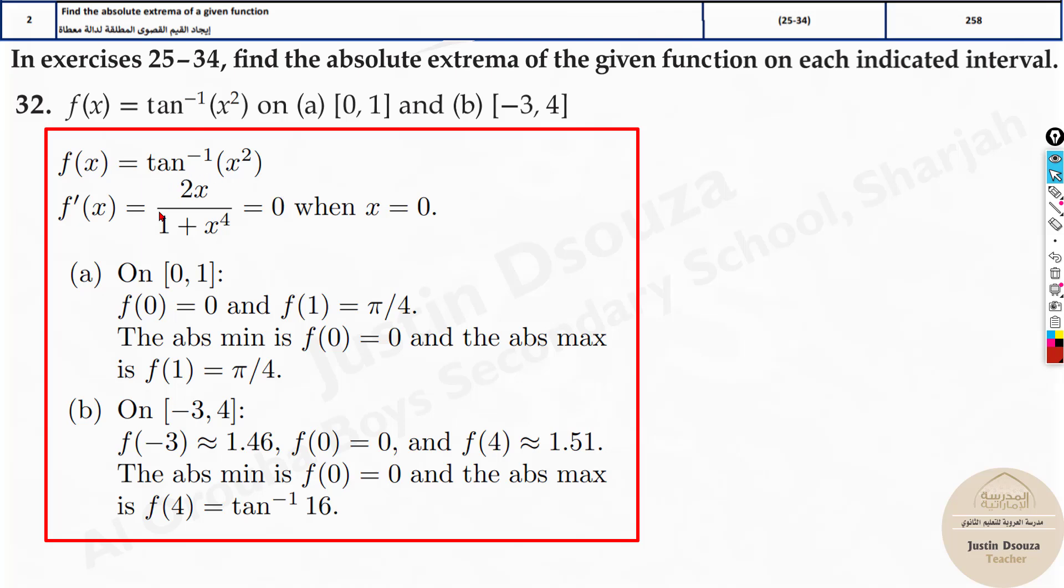Again these are all straightforward. Once you derive it make it equal to 0. You can just put this entirely in the calculator. Here it is very simple. If you take this to the other side everything becomes 0. 2x equals 0, x is 0. This is simple but otherwise you can just put this in calculator.